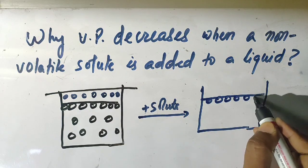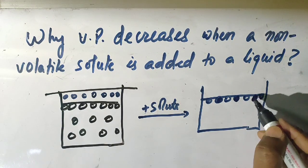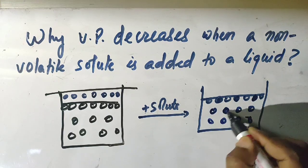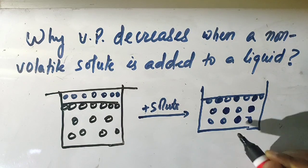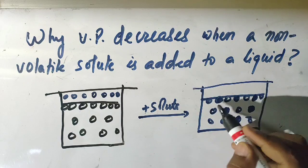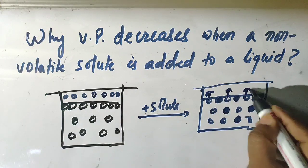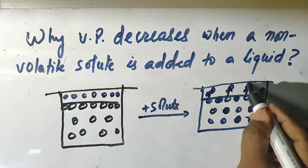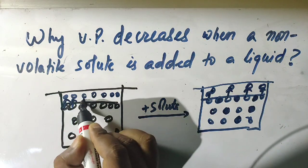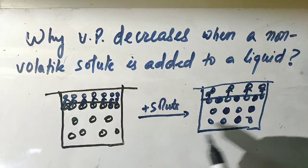These are the non-volatile solute molecules, and in the solution there will also be some non-volatile solute molecules present. Since the solute is non-volatile, it will not go to the vapor phase — only the liquid molecules will. So in this case, for example, only four molecules go into the vapor state, whereas before all the molecules were converted into vapor phase when heated.